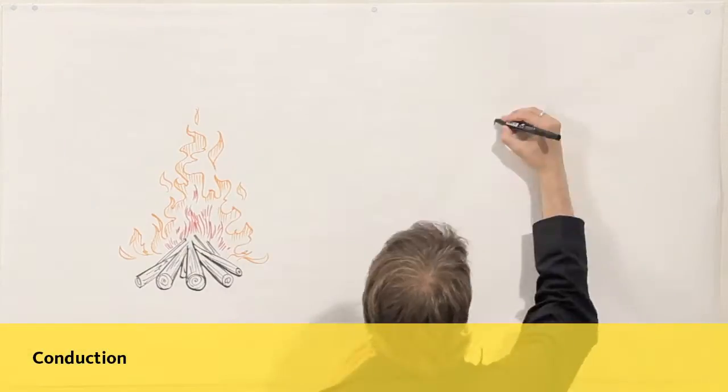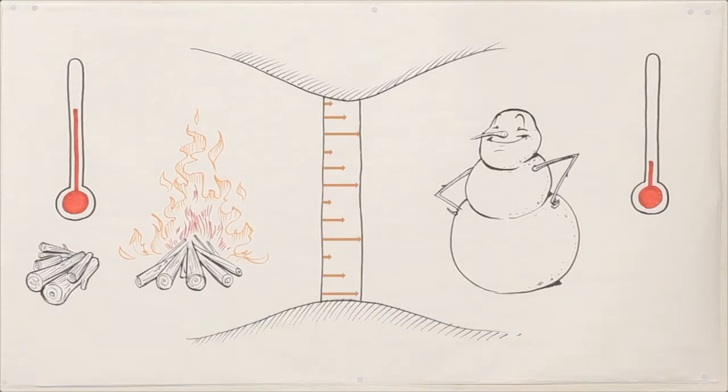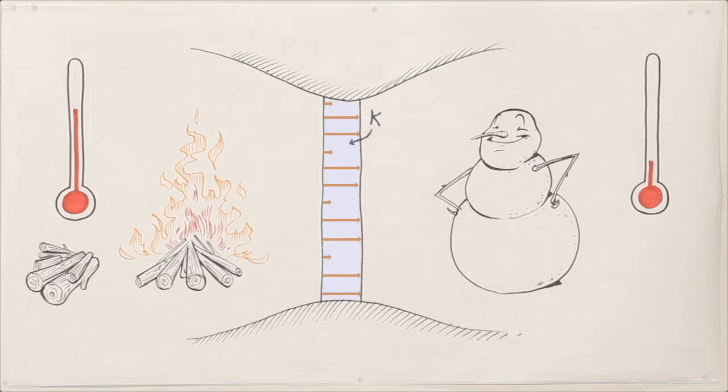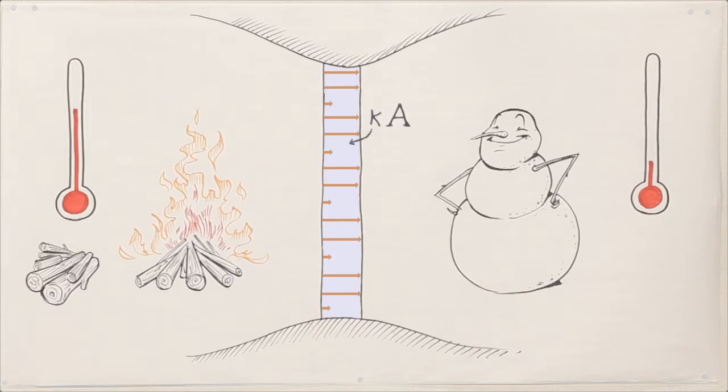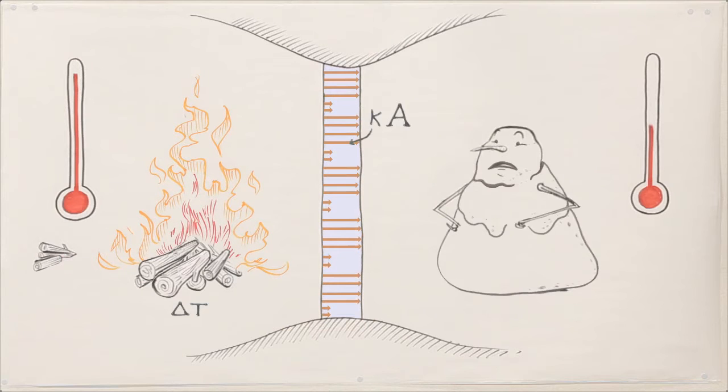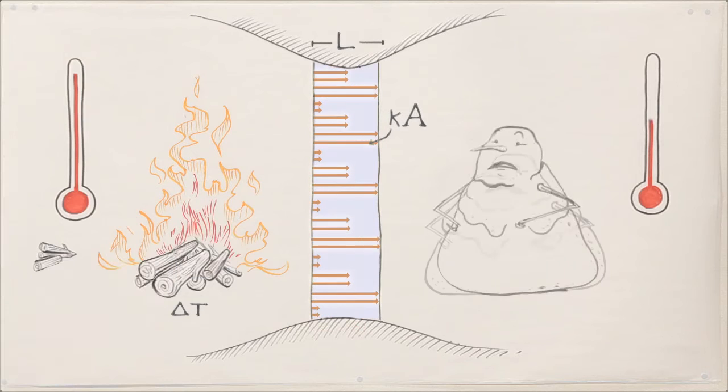Let's start with conduction. That's heat flowing through material, like the wall of a refrigerator. More heat flows as the material gets more conductive, the surface area gets larger, and the temperature difference gets bigger. That temperature difference is why the freezer will always lose more energy than the fridge. And the thicker the material, the less heat is transferred.